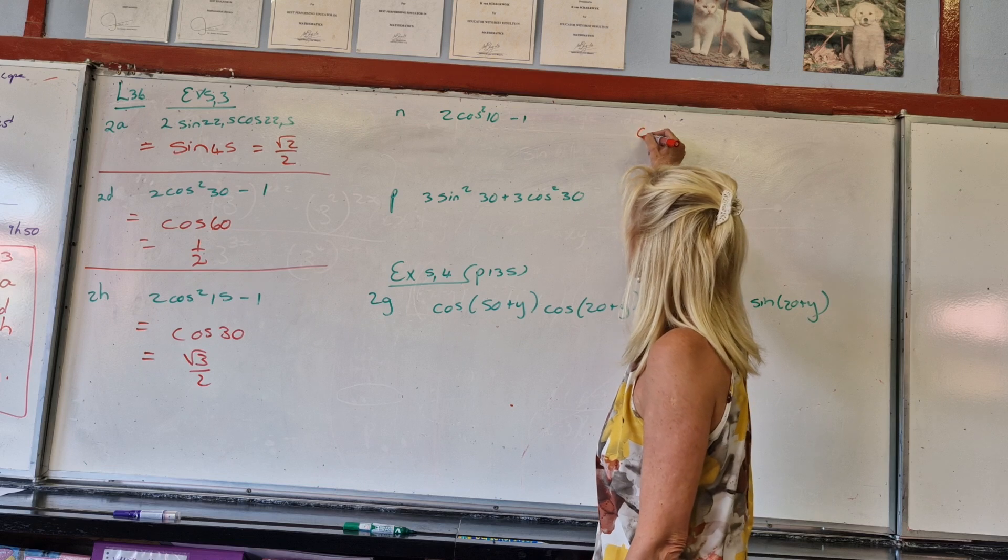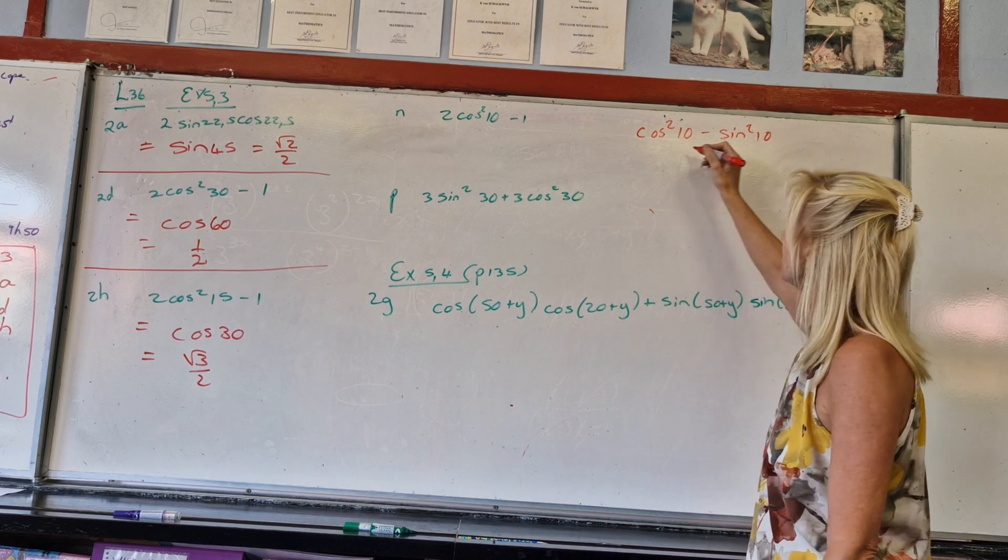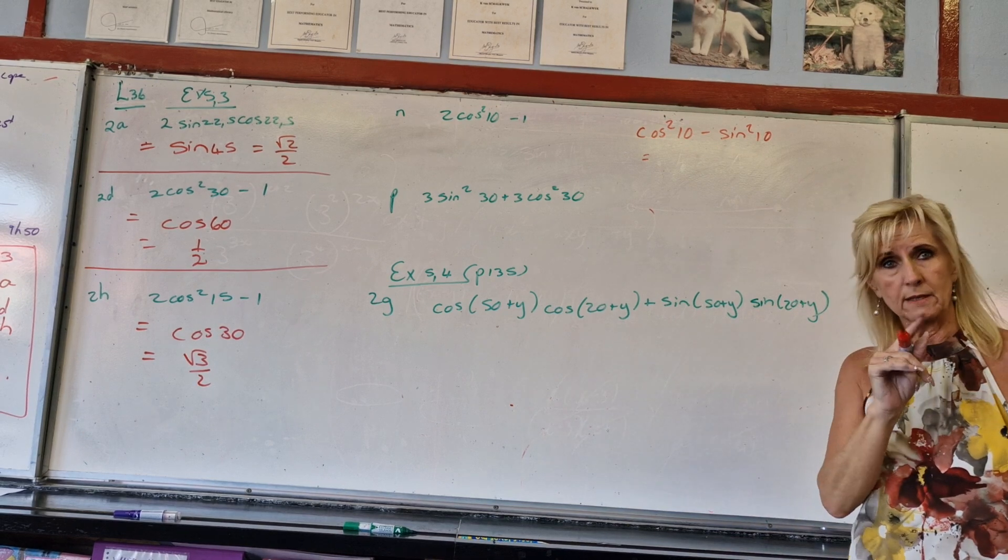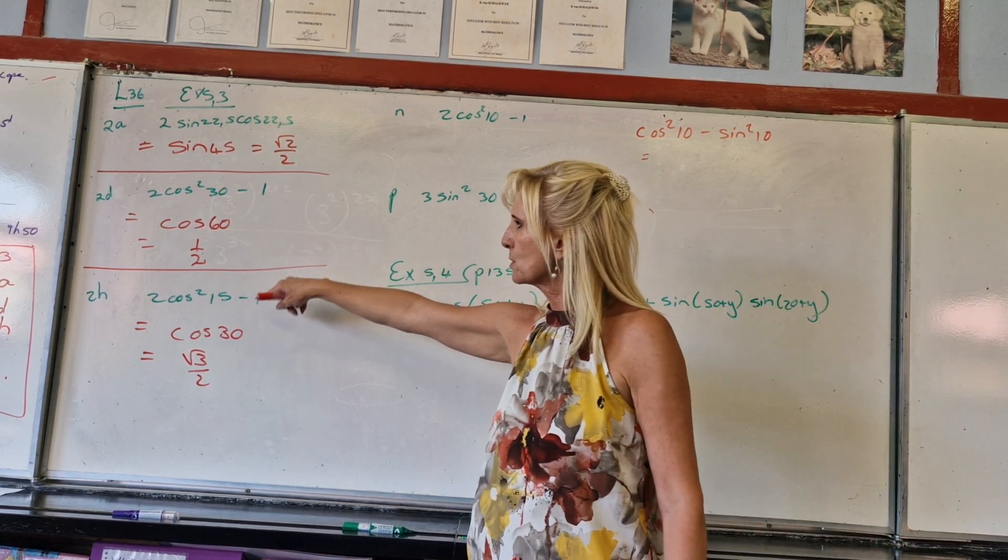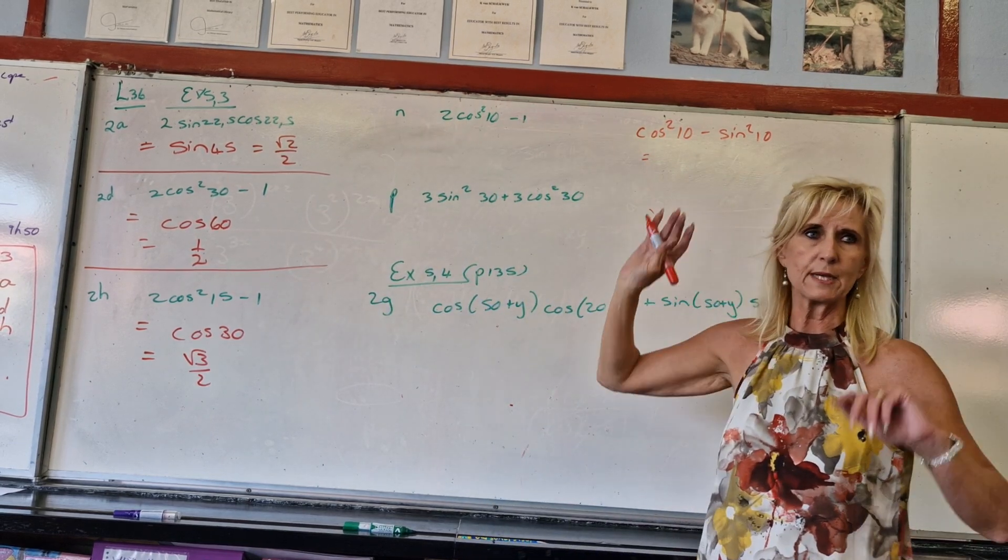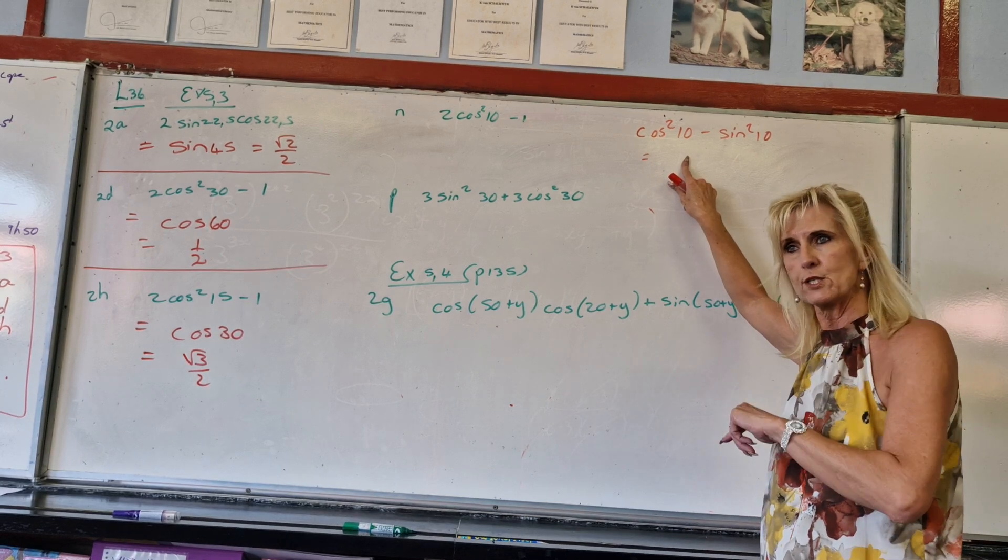It would have been good if it said cos²10 - sin²10. What would that have been? Still a double angle formula because we've had 2cos² - 1 three times and no cos²θ - sin²θ and no 1 - 2sin²θ.